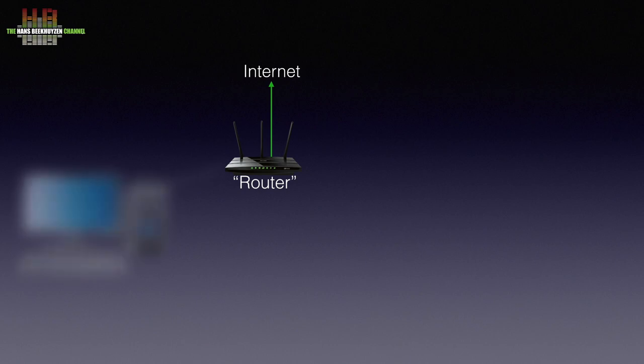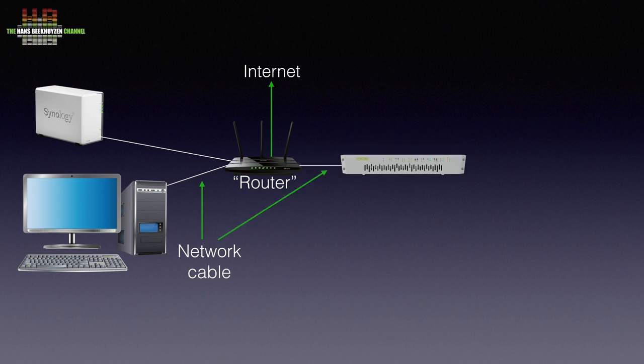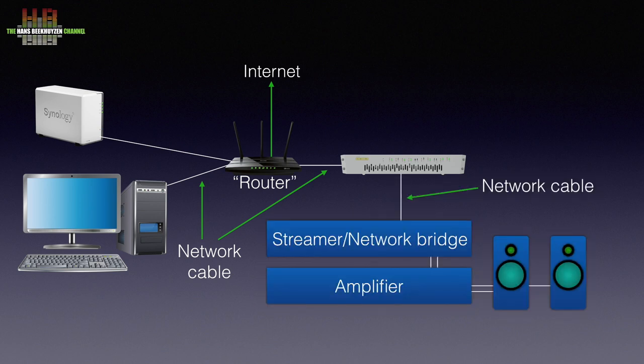Using this switch is just as easy as using a mains distribution socket. Just plug in the power adapter and the network cables and it works. The SOTM switch is connected to the router by network cable. From the SOTM switch, another network cable is then connected to your AV receiver, network audio player or network bridge, whatever you use to play music from the network. Since the SOTM switch has more than one network socket, you can also connect other network equipment to it, like a game console, smart TV, Blu-ray player and so on.